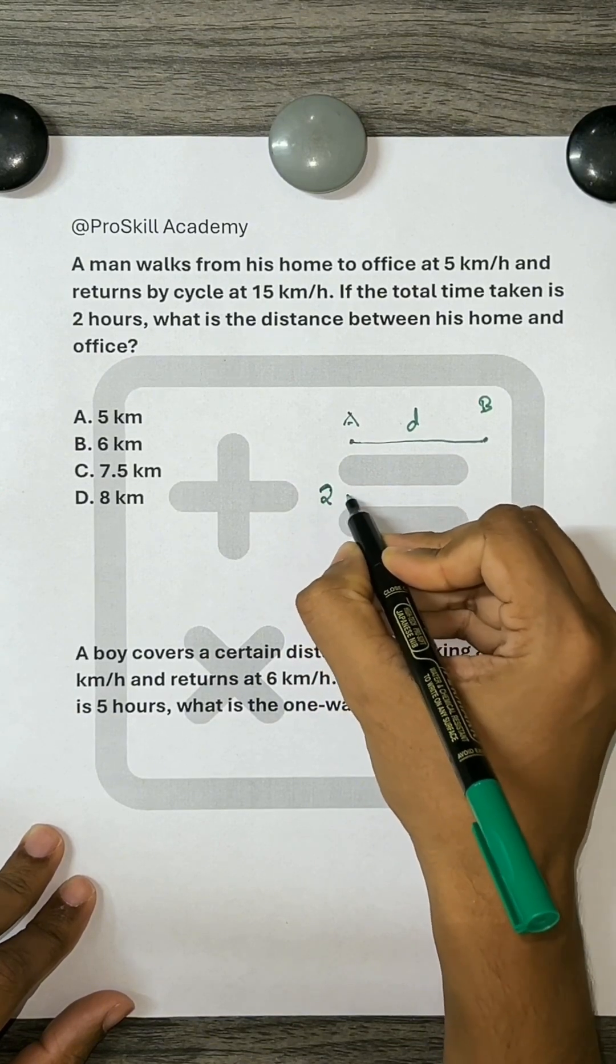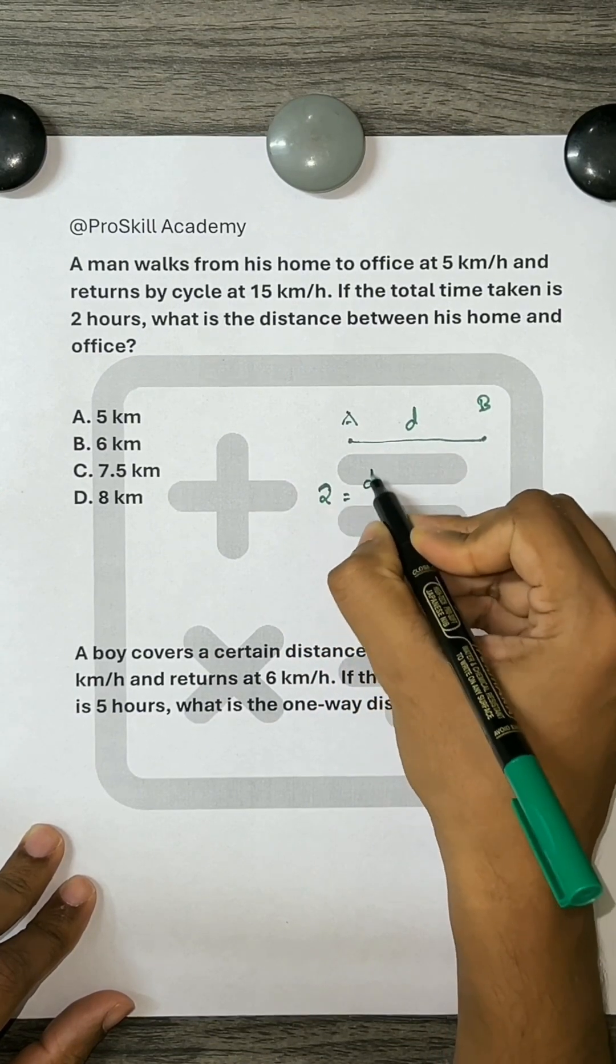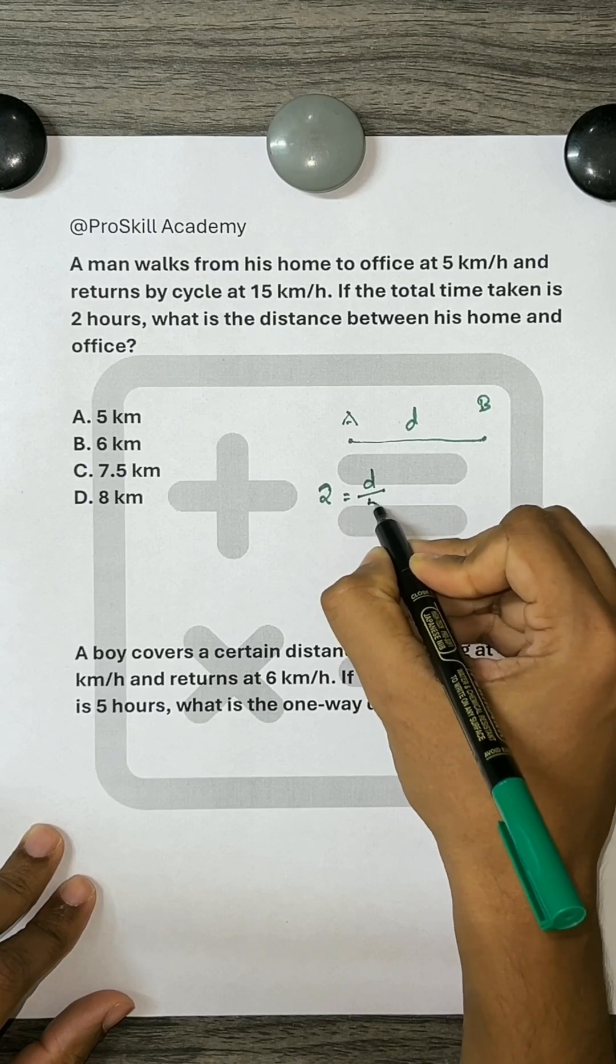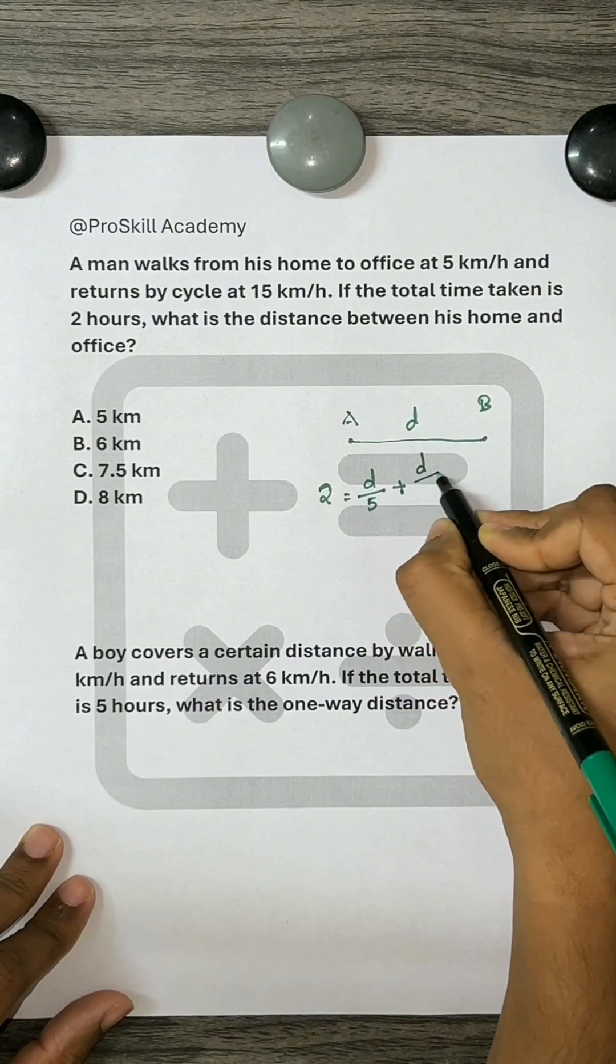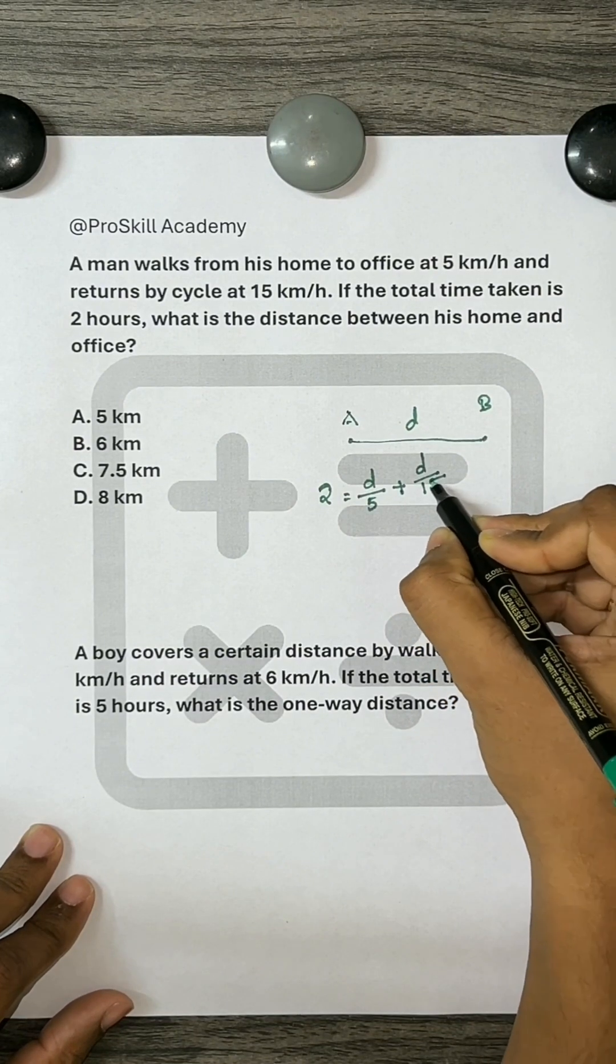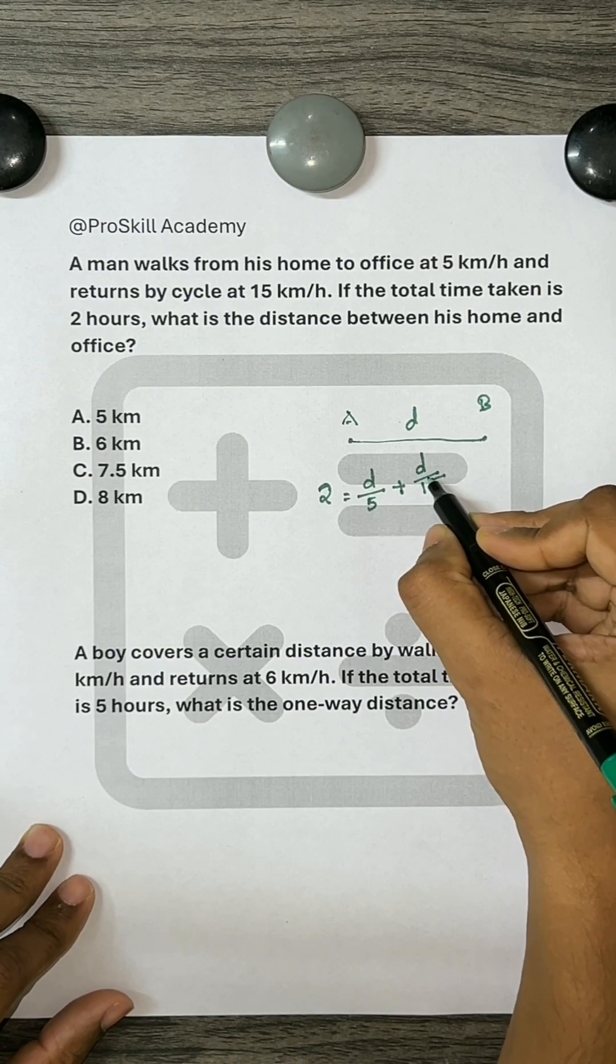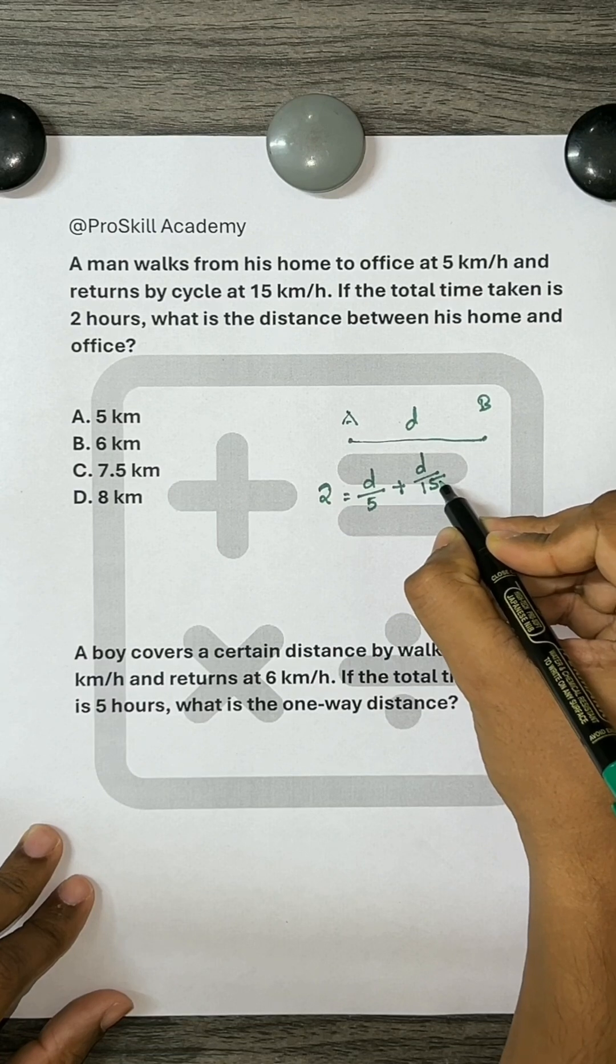Now, these 2 hours can be achieved by the time taken while traveling, that is distance divided by his speed, plus the time taken by the man while coming back, which is distance traveled by him divided by the speed at which he traveled.